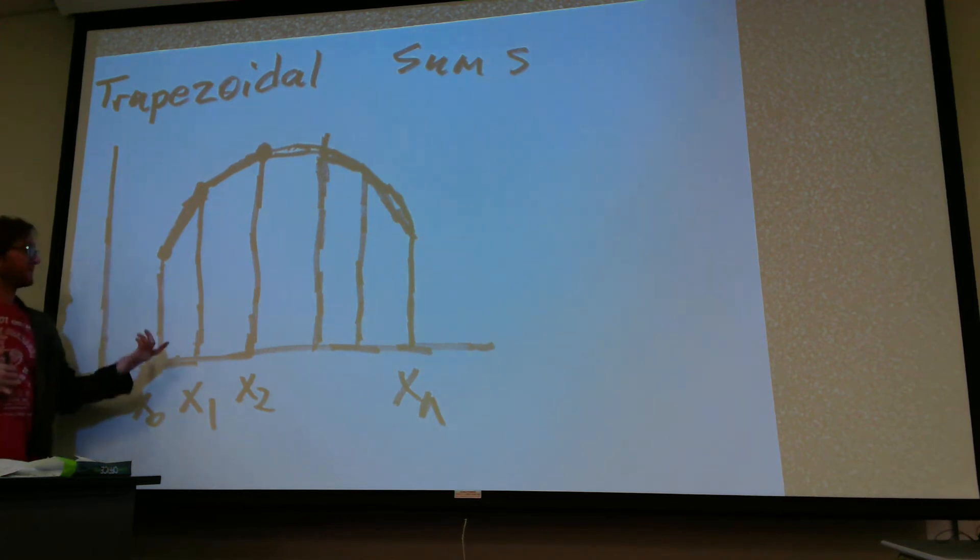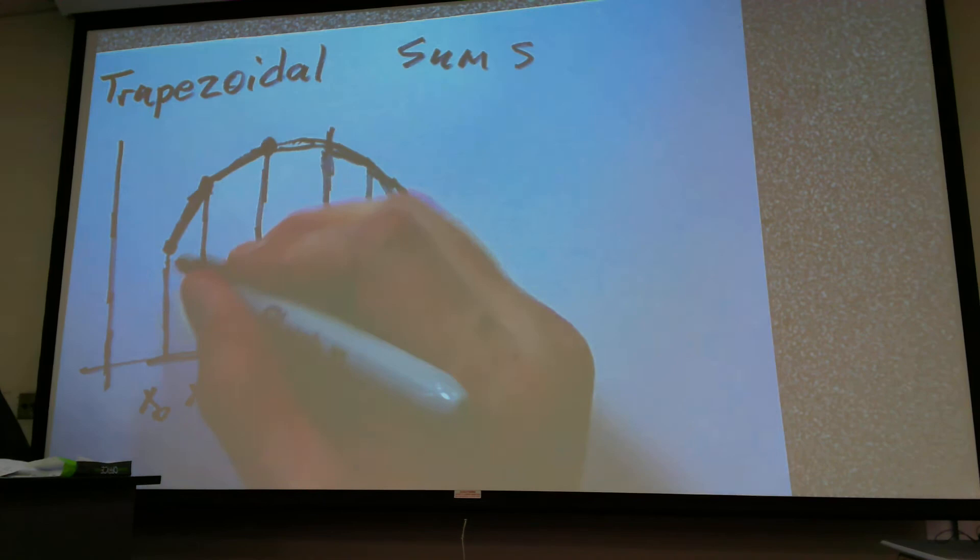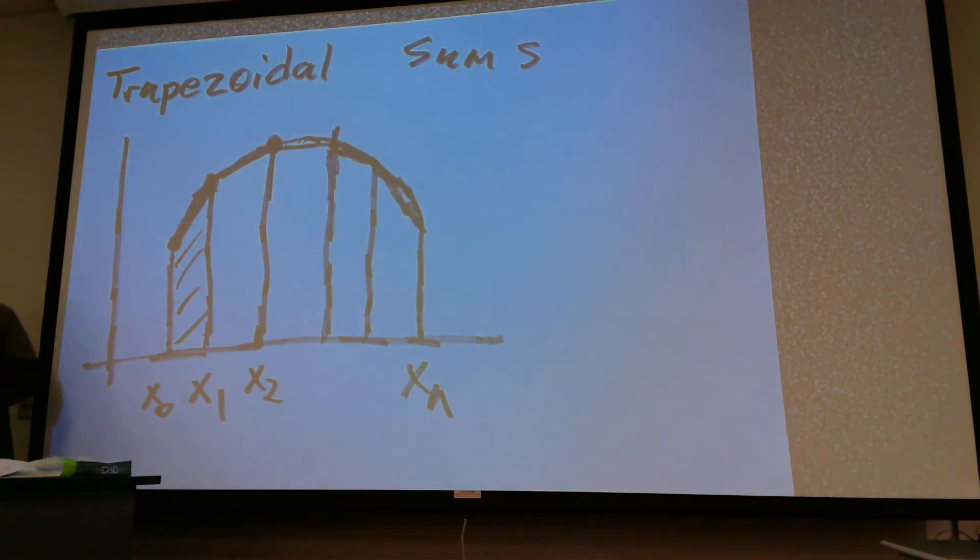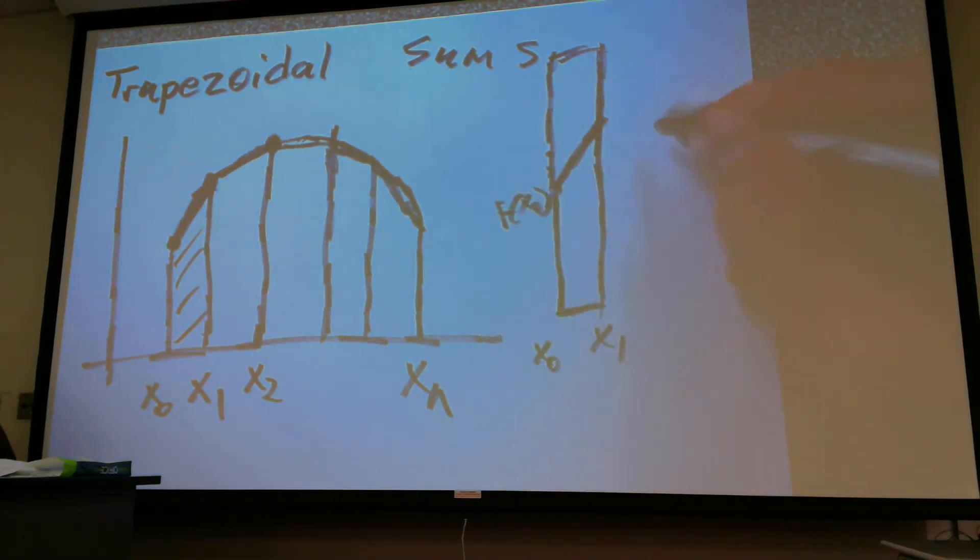Well, we'll think about it from a geometric aspect. So, let's consider this guy right here. If I wanted to figure out that area right there, well, it's a trapezoid, so what I can do is let's say I double it up and form it into a rectangle. So, this would be x-naught, this would be x1, that would be f of x-naught, f of x1.